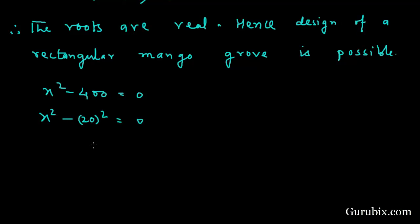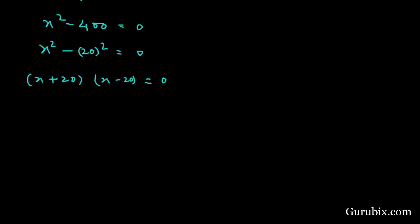We have x squared minus 400 equals 0. This means x squared minus 20 squared equals 0. This means x plus 20 and x minus 20 equals 0.